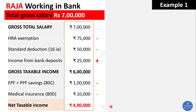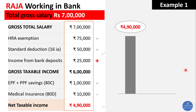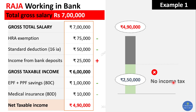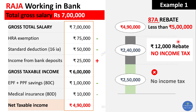Raja's net taxable income becomes four lakh ninety thousand — that is six lakhs minus one lakh ten thousand in deductions. He falls in the 2.5 to 5 lakh tax bracket, paying five percent. Breaking it down: for the first 2.5 lakhs, no tax; for the next 2.4 lakhs, five percent, which is twelve thousand rupees. However, under Section 87A, since his net taxable income is below five lakhs, he can claim a rebate and pays zero income tax — though he must still file his income tax returns.